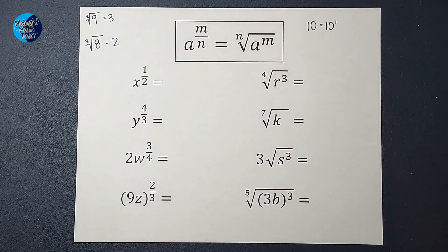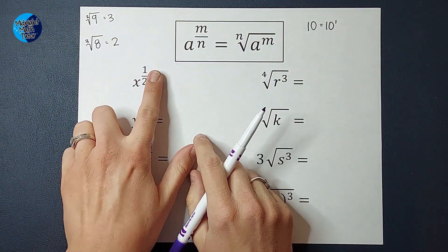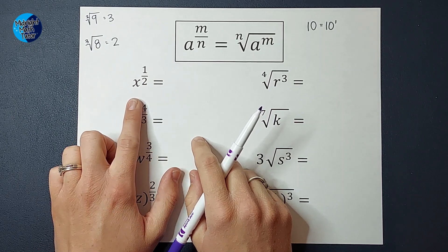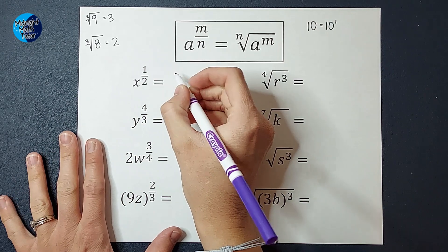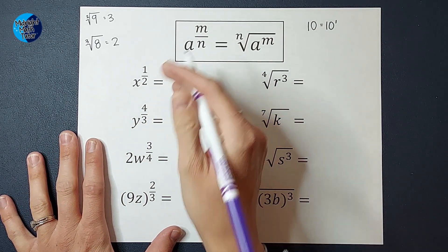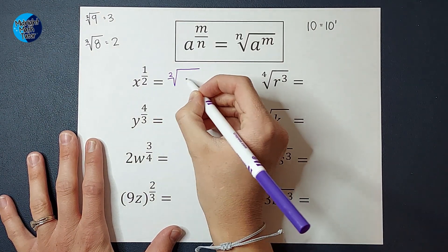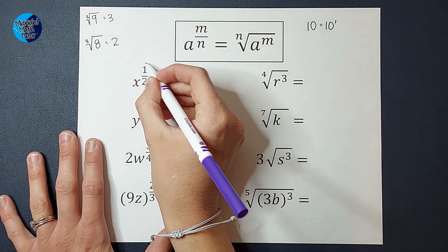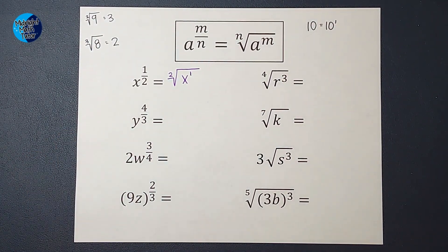Now let's do it with some numbers because sometimes it's like that is a lot of letters. So following this, I have x to the 1 half power. So following this, this would show that my denominator goes on the outside of my radical. And the top number, the numerator, becomes the exponent on that number under there.